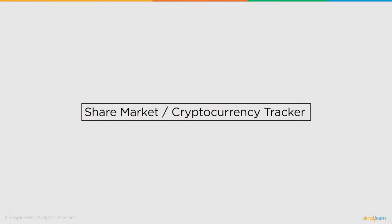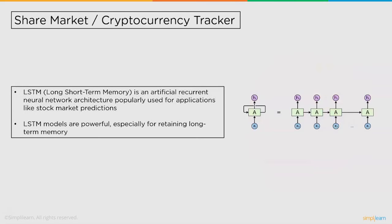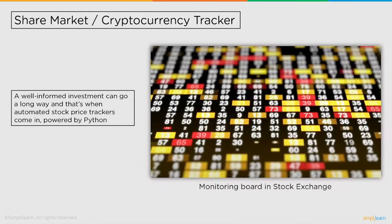Moving ahead, we have the share market or cryptocurrency tracker. Python is used for tracking stock market and cryptocurrency prices. The prices of the share market and cryptocurrencies go up and down every instant, so Python is used to track and predict the market for profitable investment. Even though markets are highly unstable, Python automation can provide a trend for a better purchase or sell. Long short-term memory (LSTM) is an artificial recurrent neural network architecture popularly used for stock market predictions. LSTM models are powerful especially for retaining long-term memory and can provide trends using large amounts of data. A well-informed investment can go a long way, and that's when automated stock price trackers powered by Python come in.